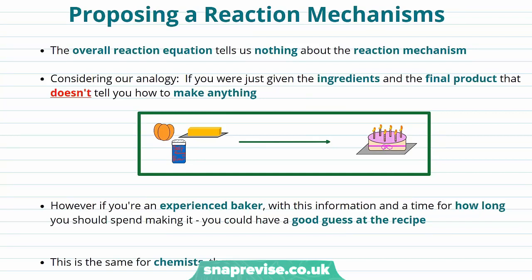Now we've looked in detail at the rate determining step, let's think about proposing a reaction mechanism. The overall reaction equation tells us nothing about the reaction mechanism. Considering our analogy again, if you're just told the ingredients for a cake and what the final product looks like, that doesn't tell you anything about how to make the cake. You'd be at a loss. However, someone who's an experienced baker, if they know the ingredients and what the final cake is meant to look like, then they'd have a pretty good idea of how to make it. Extra information that will be very useful to them is how long the process is. Then they really can have a good guess at the recipe.